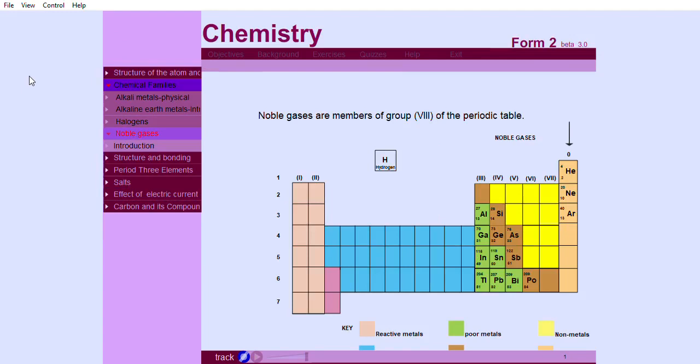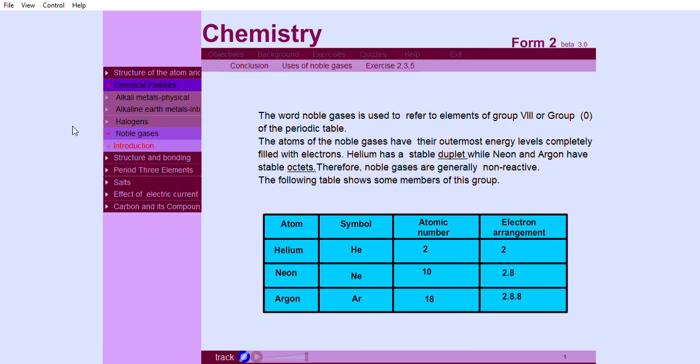Noble gases are members of group 8 of the periodic table. The word noble gases is used to refer to elements of group 8 or group 0 of the periodic table.